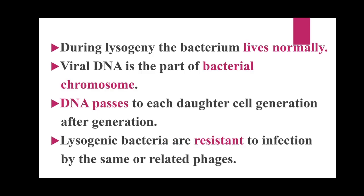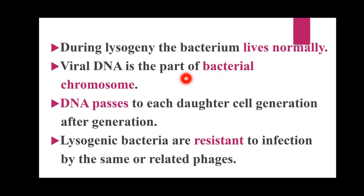In the lysogenic cycle, the bacterial cell normally grows and is not harmed by the virus. Remember, in the lytic cycle the bacterial cell died, but in the lysogenic cycle the bacteria cell does not die — rather the bacteria grows normally. The viral DNA becomes a part of the bacterial chromosome, living as a portion of it. As the bacteria divides, the viral DNA also divides, but the bacteria is not harmed by the viral DNA.